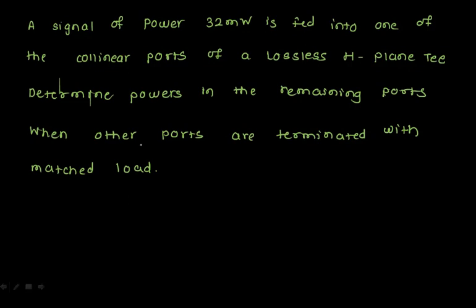We will solve problems based on passive microwave components. The first problem: a signal of power 32 milliwatts is fed into one of the collinear ports of a lossless H-plane T. Determine the powers in the remaining ports when other ports are terminated with matched termination.